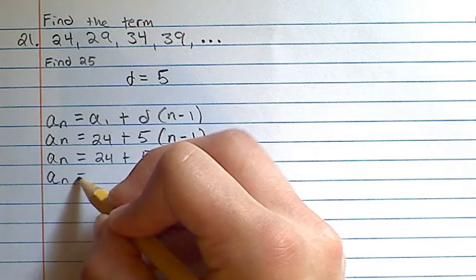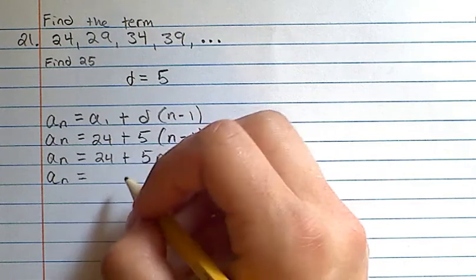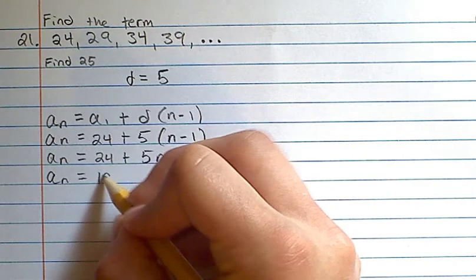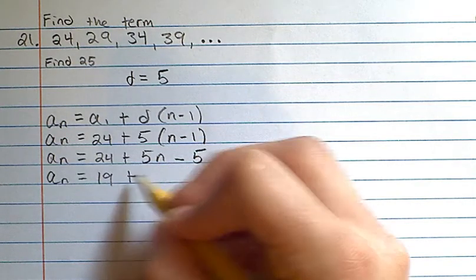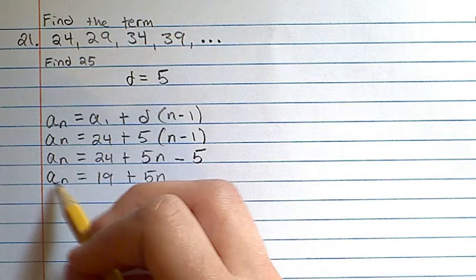and we get 24 minus 5 is 19, plus 5n. This is going to represent an.